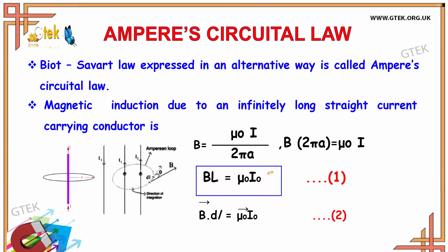Taking this as equation 1 and applying the vector direction, B vector dot dL equals mu naught I naught. This will be equation 2 for Ampere's circuital law.